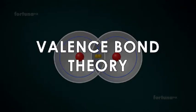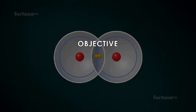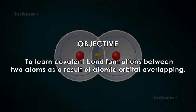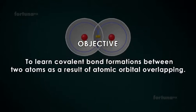Valence Bond Theory. Objective: To learn covalent bond formations between two atoms as a result of atomic orbital overlapping.